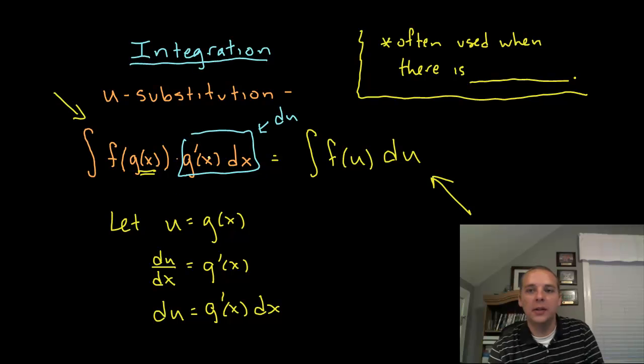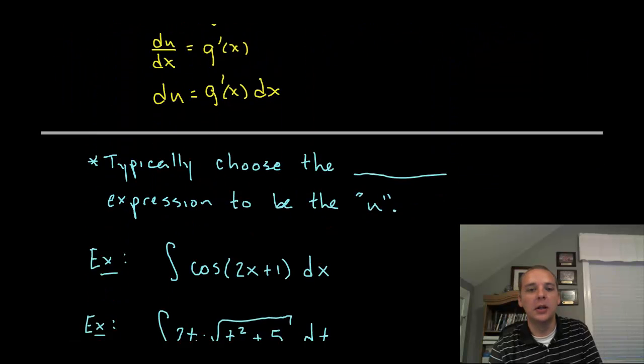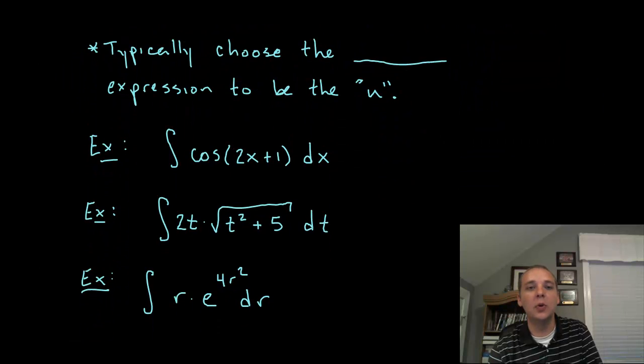Now this is often used when there is composition. That's usually your indicator that we're going to use u-substitution. As a matter of fact, because there's usually composition, this also reveals what our choice for u typically is. Typically we choose the inside, the inside of the expression to be the u.